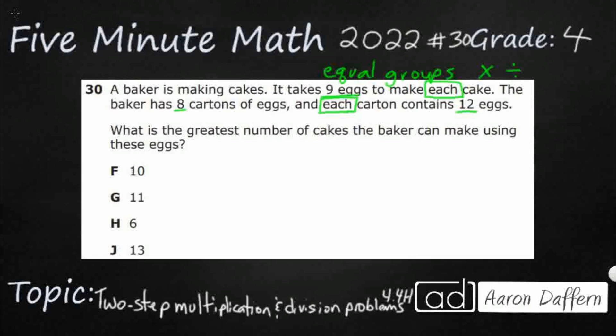What's the greatest number of cakes the baker can make using these eggs? The way this is phrased makes me think there might be a few eggs left over, so we're gonna have to interpret the remainder with division. Let's see how many eggs we have. Once I can figure out how many eggs I've got, I know that I can just break them up into groups of nine to make a cake.